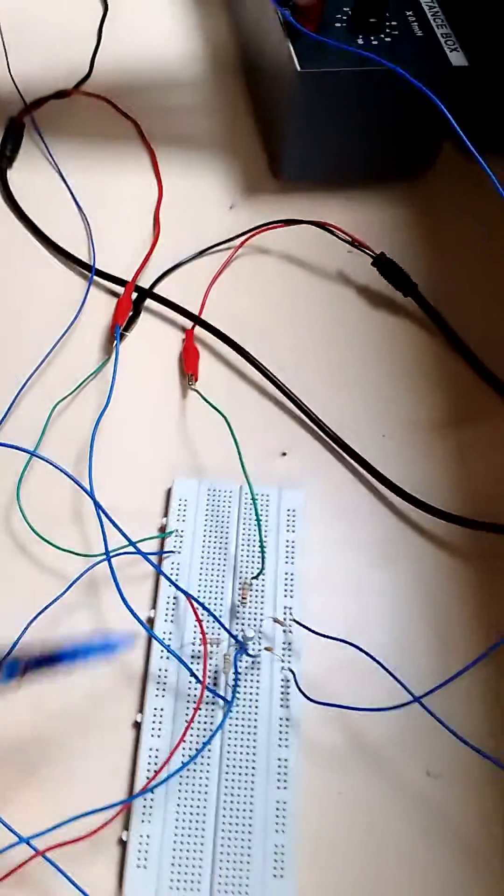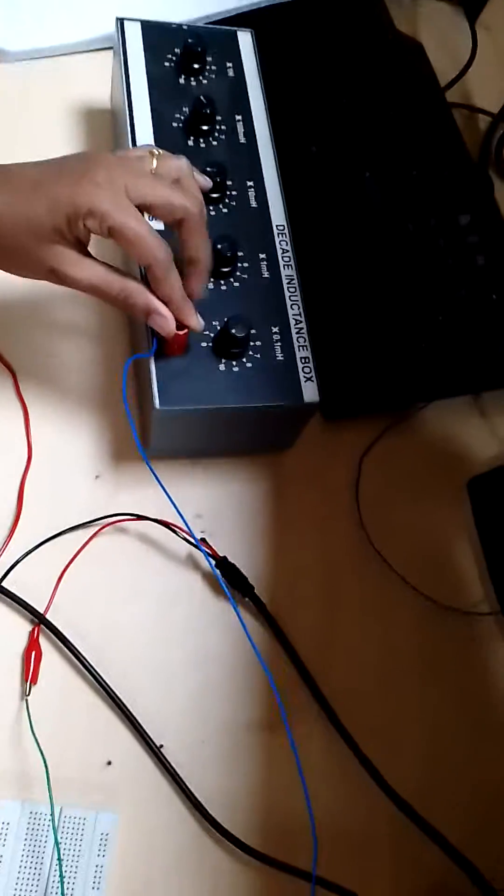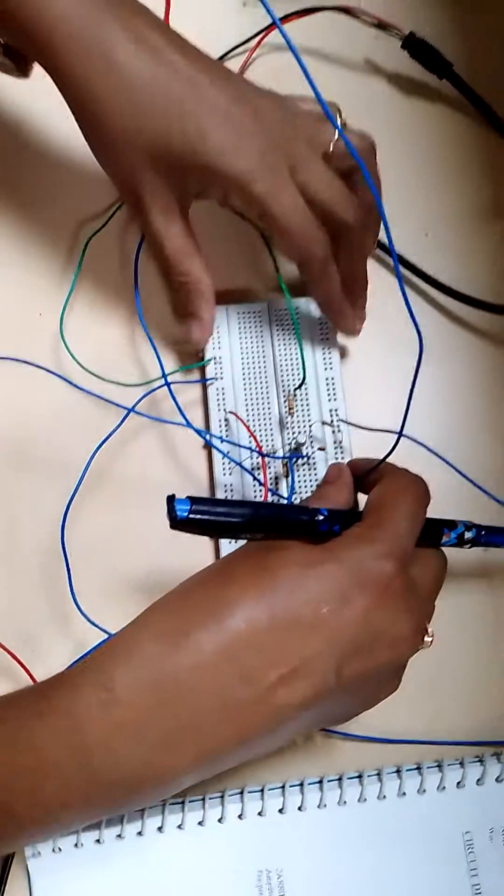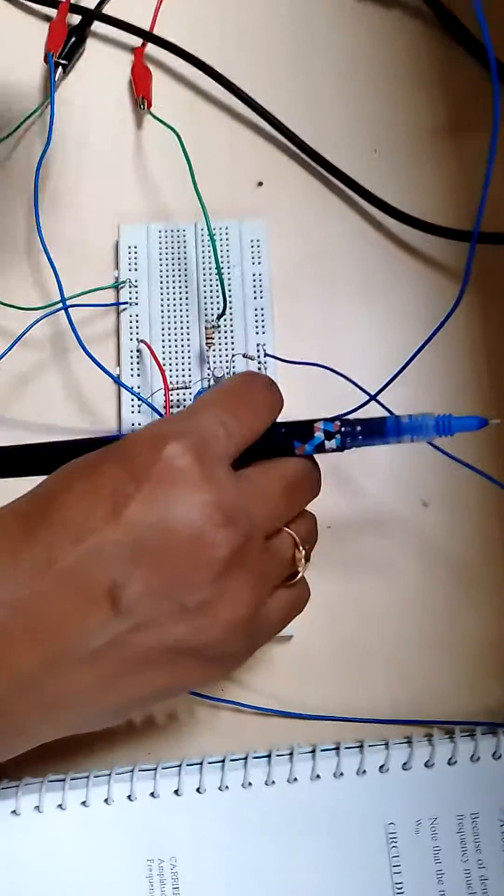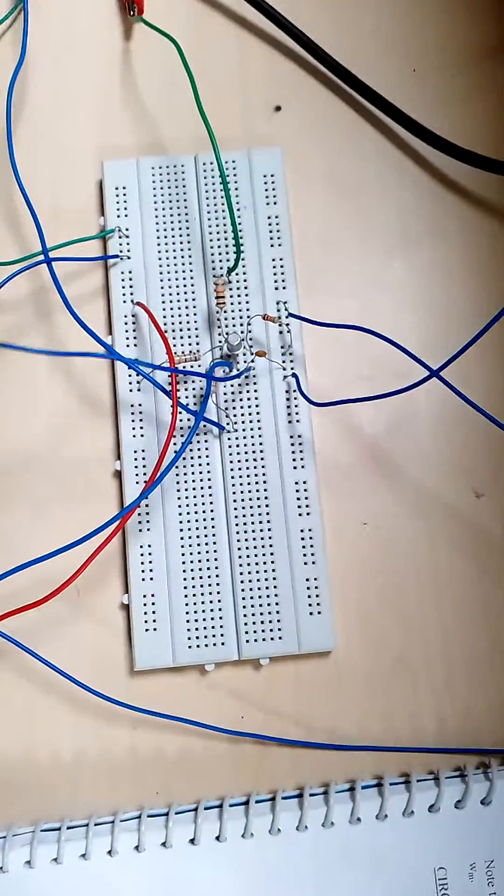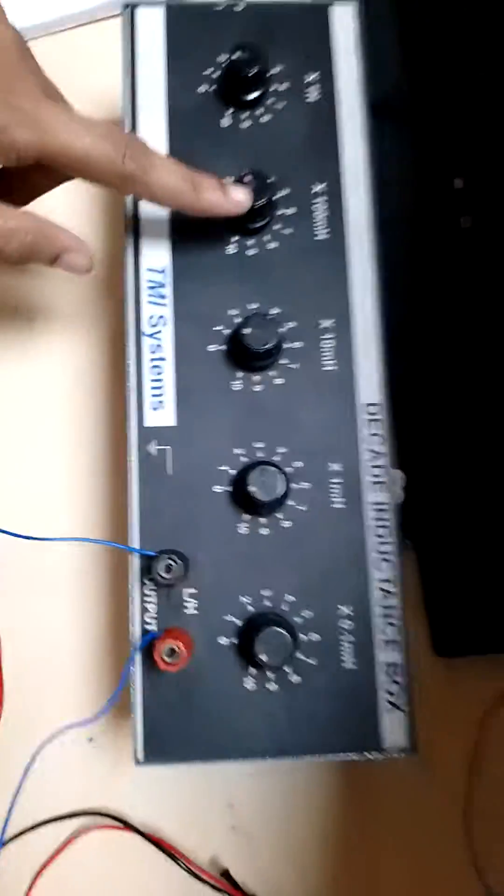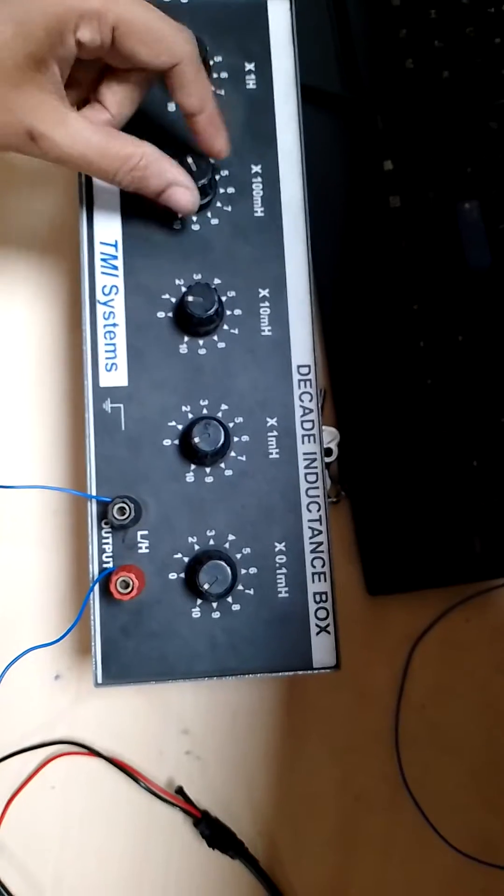From the collector, we are going to connect another inductance set to 130 milli henry. We connect the positive of the inductance to supply voltage and the negative to the collector terminal. This is the inductance connection, set to 130 milli henry. We have a 100 milli henry inductance here.